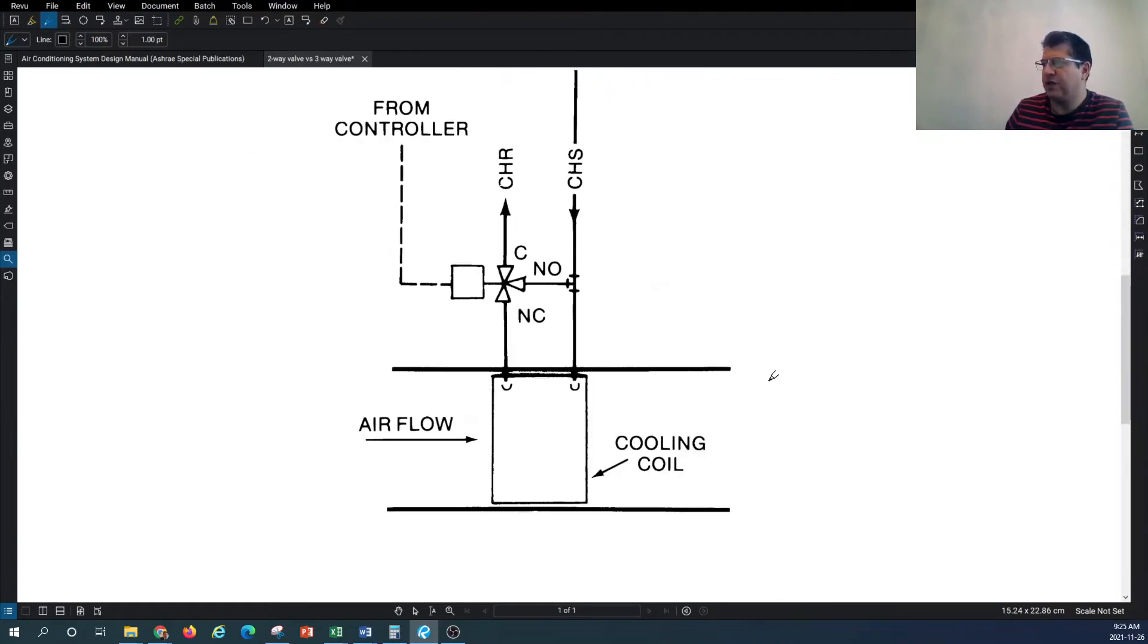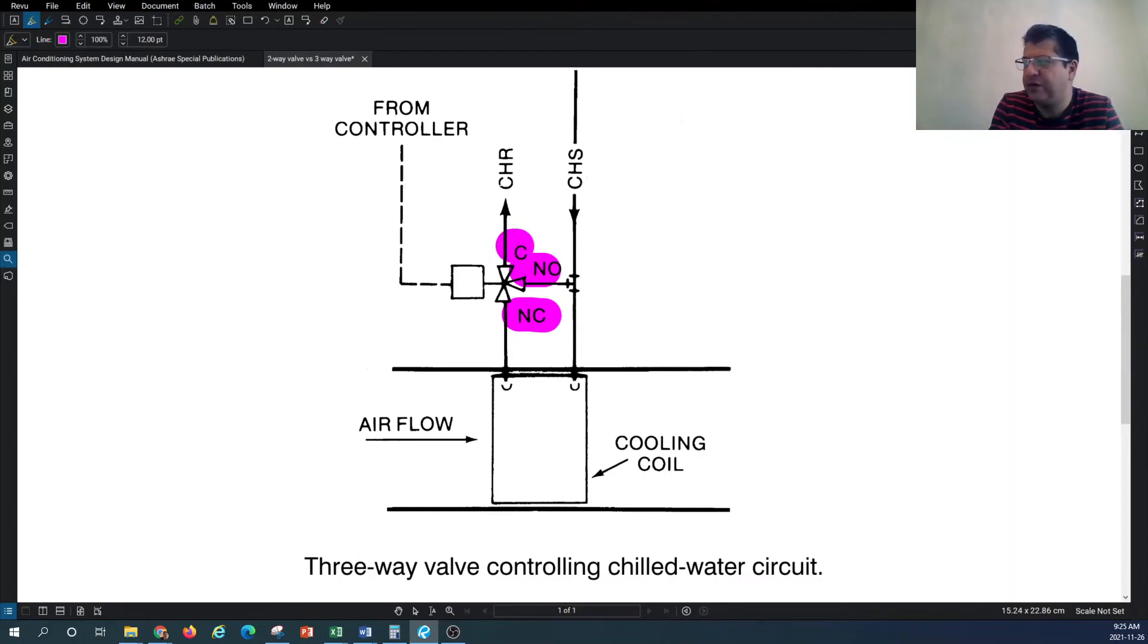In the second option, we can look at the three-way valve arrangement. In this arrangement, normally the control three-way valve is put on the return side of the coil. As you can see here, there are three ports associated with the three-way valve. The two ports of this valve, as you can see, have normally closed and normally open positions to allow the flow that comes to your coil.